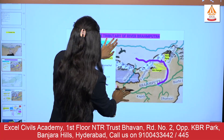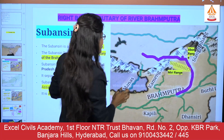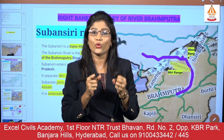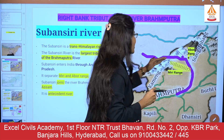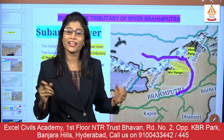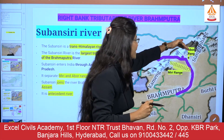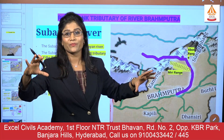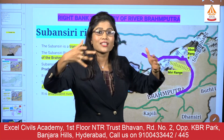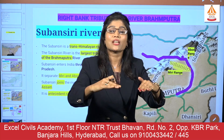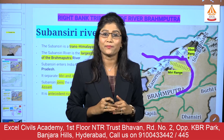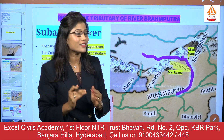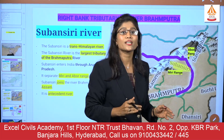From the Tibetan region, Subansiri originates and cuts through the greater Himalayan range, then flows between Abor and Miri ranges through Arunachal Pradesh. After crossing the Himalayan range it enters the Brahmaputra plain region in Assam. Once it comes to Assam, it takes a downward turn and confluences with the river Brahmaputra in Assam itself.